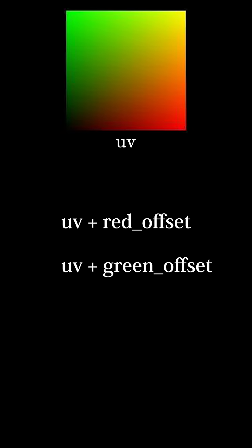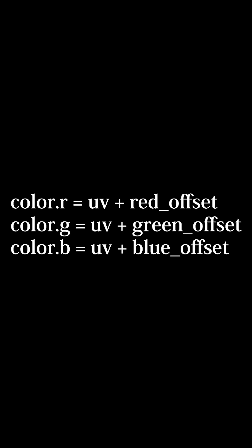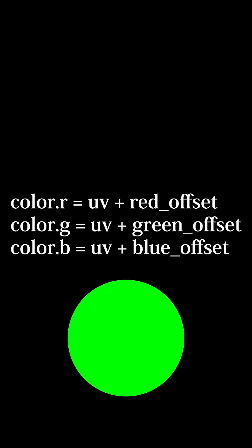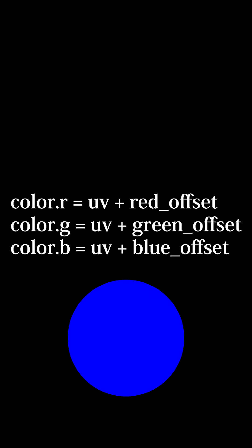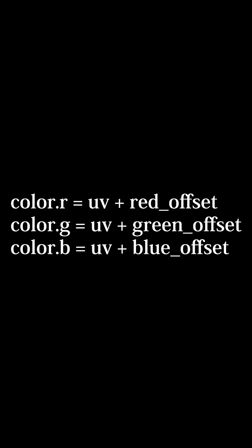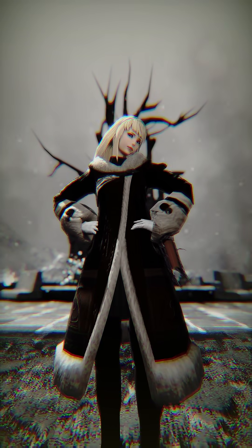To replicate this behavior in a shader, we take the UV coordinates of our pixel and construct three new UV coordinates with differing offsets. We then construct a new color with the red, green, and blue color channels sourced from their individual offsets. These offsets control the color and distance of the distortion.